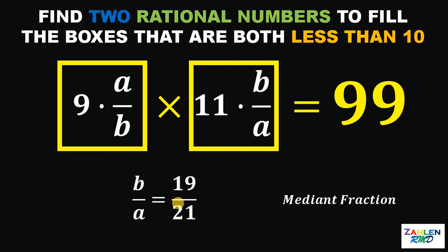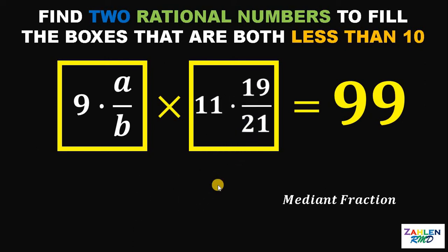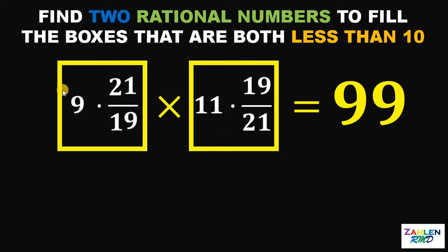And now, at this point, since we have the value for B over A, we can now replace this B over A with 19 over 21. Also, this A over B is the reciprocal of 19 over 21 or just 21 over 19. Take note that 9 times 21 over 19 times 11 times 19 over 21 is 99, because we can easily see that we can cancel out this 19 and this 21.